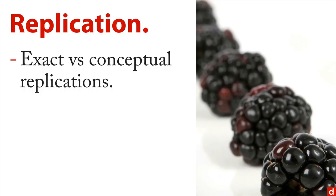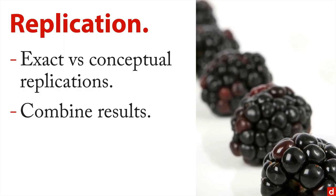But one thing you want to do when you do a replication is to actually combine the results. And what's interesting is the first study can serve as the Bayesian prior probability for the second study. So you can actually use meta-analysis or Bayesian methods for combining the data from the two of them.